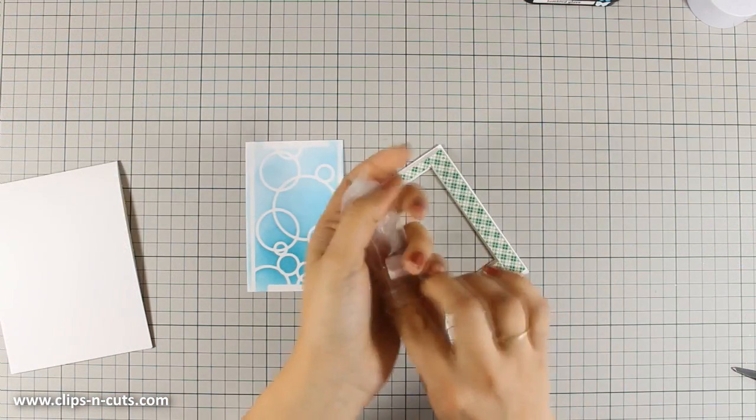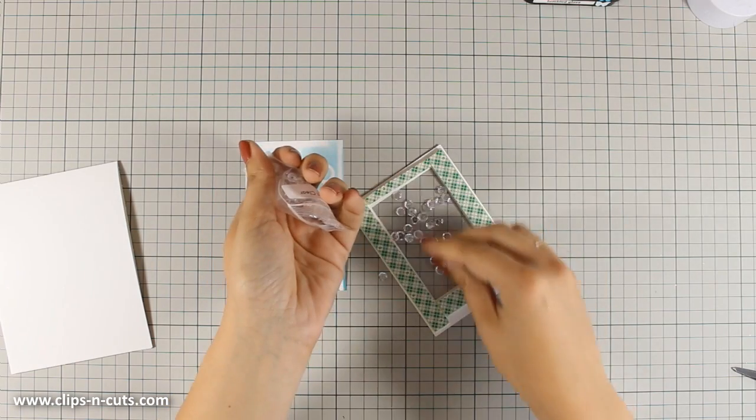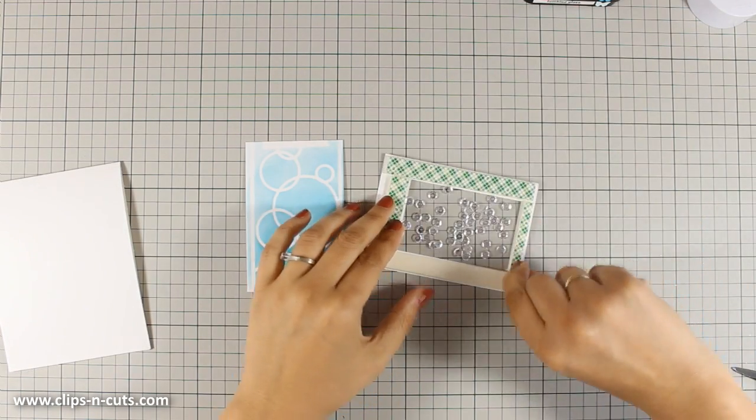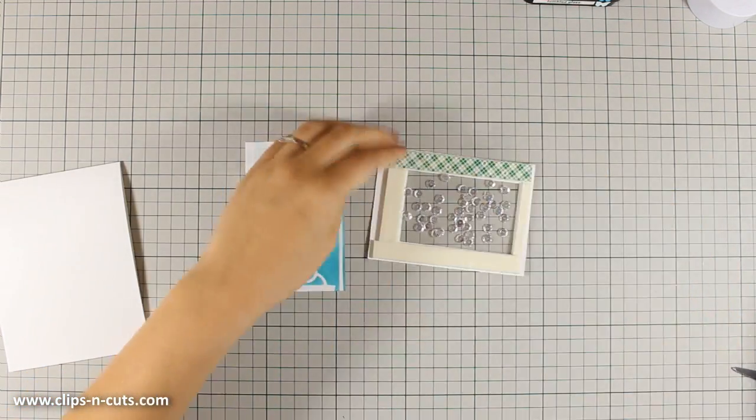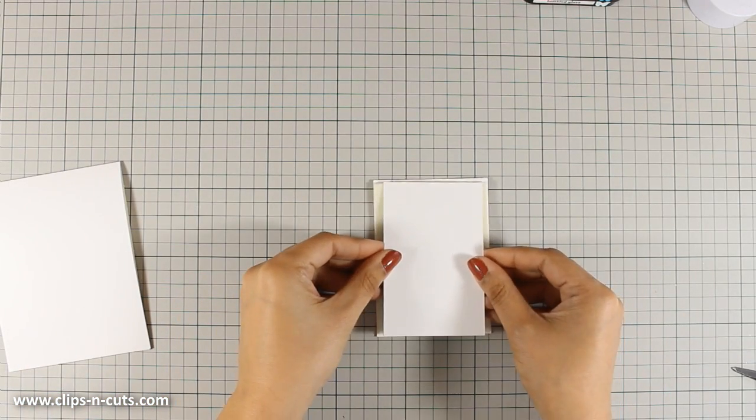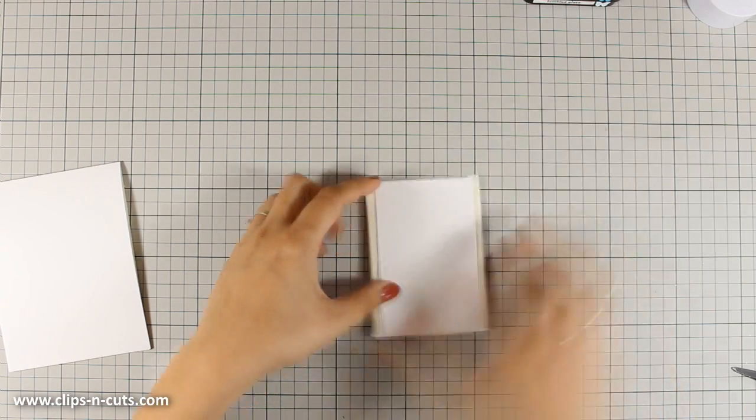For my window I am going to add some clear sequins. I don't want to have too many and I just love how they will look as if they are bubbles inside the water at the end. So I am peeling off the tape adhesive and I am going to stick my background on top and my shaker window for my card is ready.